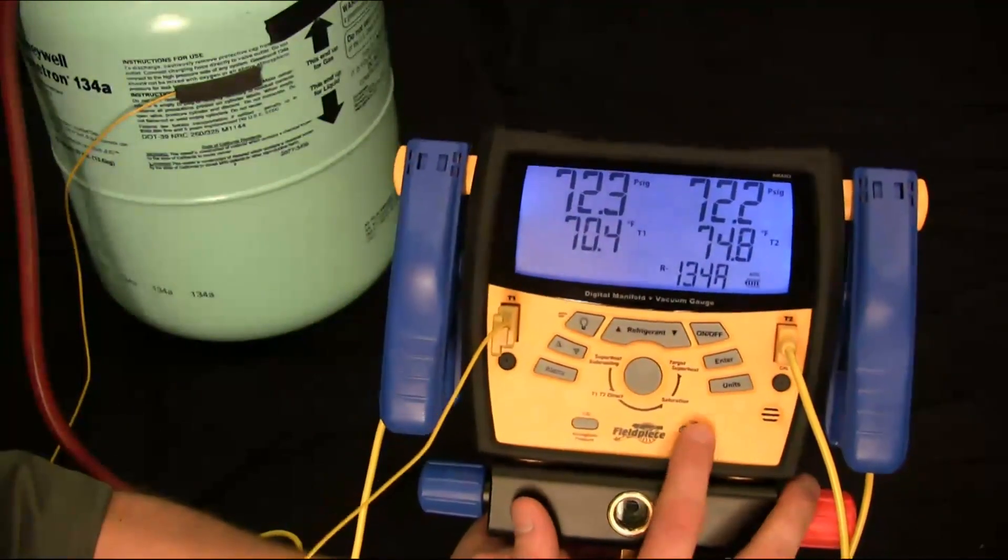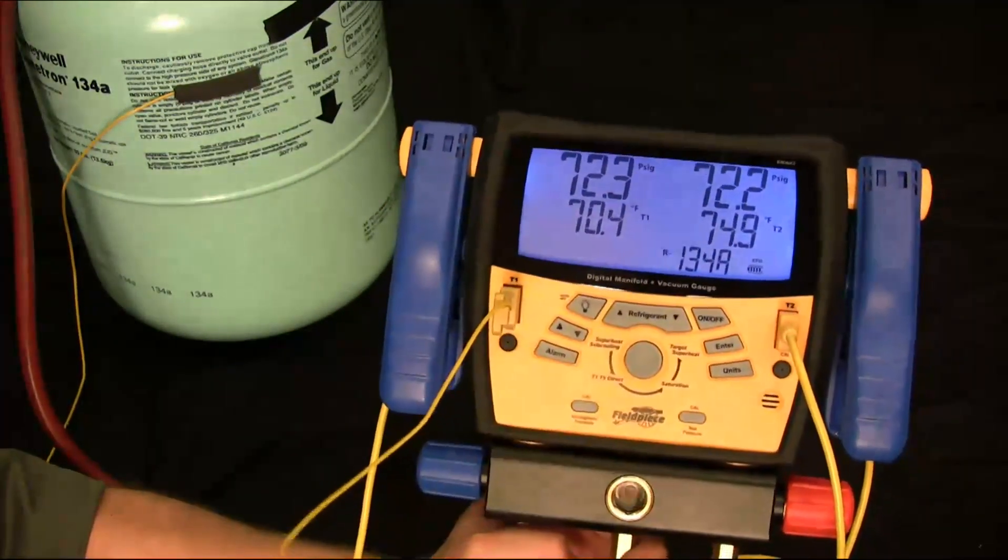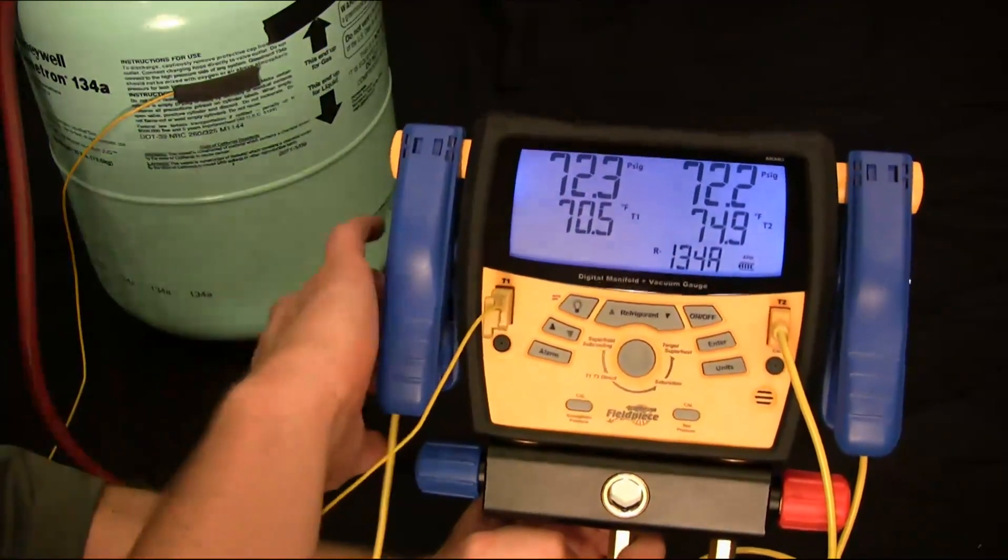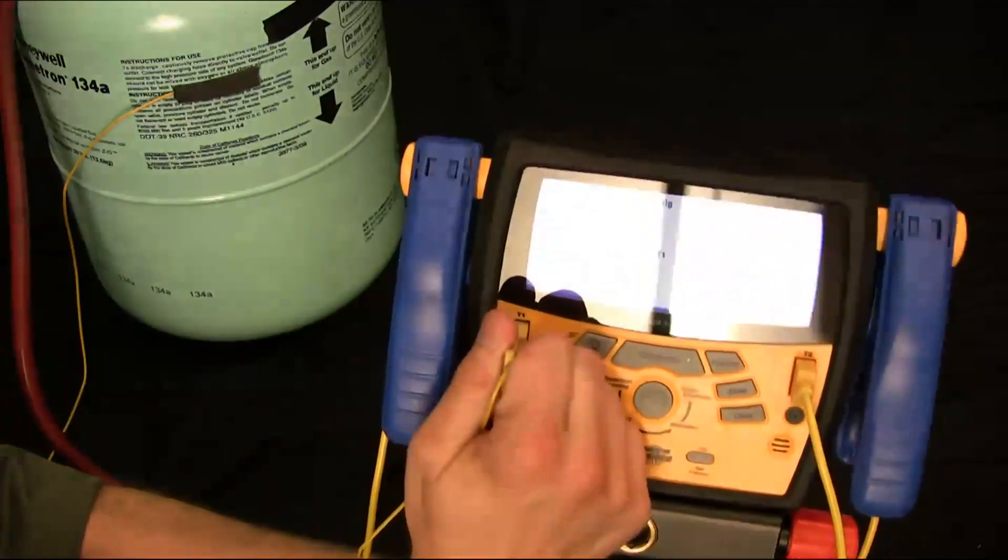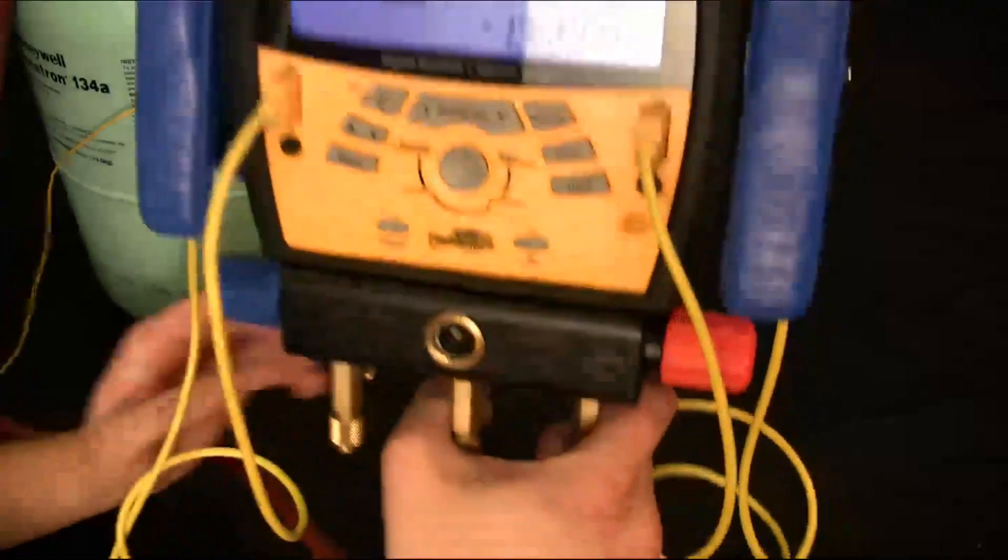And so now what I'm going to do is just press the calibration button. It says it's within range. Good. That means we're all good to go. So now what I can do is I'm just going to take this out and put the pipe clamp back in. All right. So that's how to calibrate it.